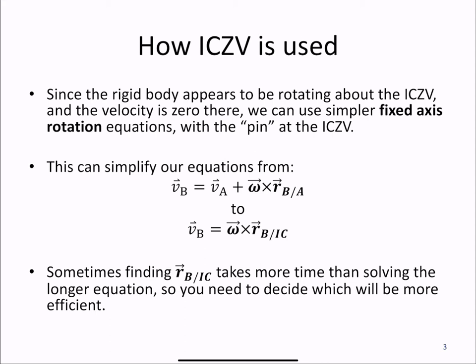For example, we can go from the velocity at B equals the velocity at A plus omega cross R of B with respect to A, to the simpler velocity of B equals omega cross R_B with respect to the ICZV.